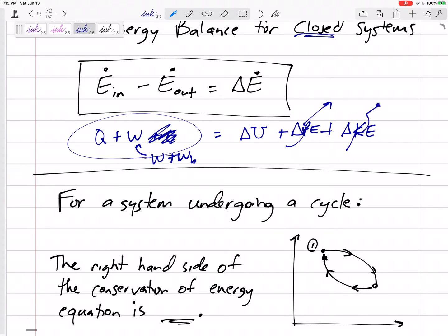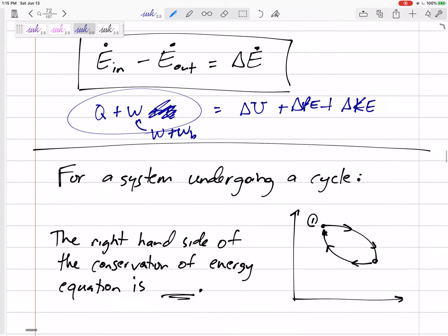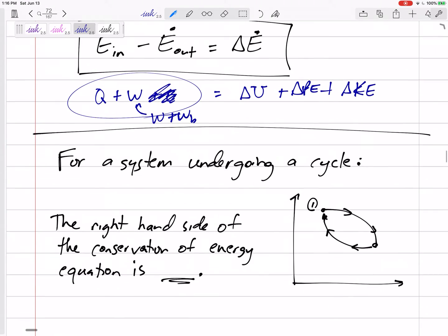Generally, I mean, I'm not going to say these are always zero, but generally for closed systems, our fluid is not going five meters per second, right? It's in a tank. It's in a piston cylinder. There's usually not much of a change in height. So generally, the right-hand side is delta U, but technically it could be change in internal energy and potential and kinetic energy.